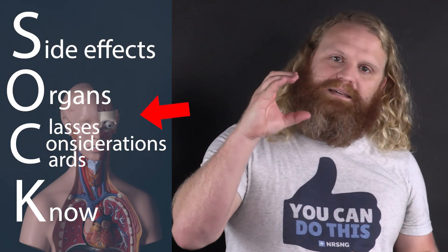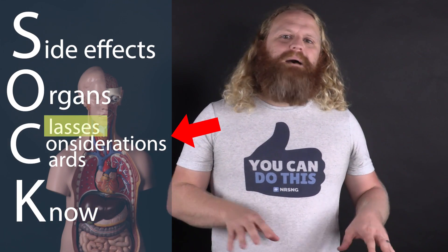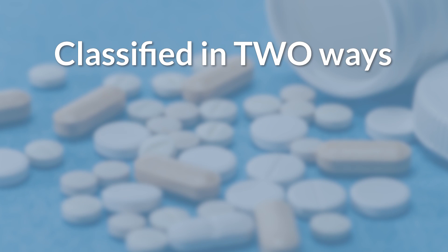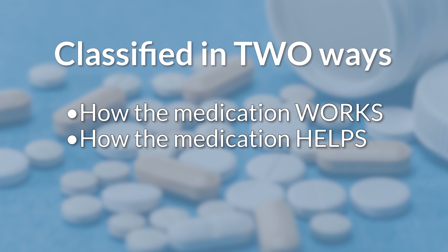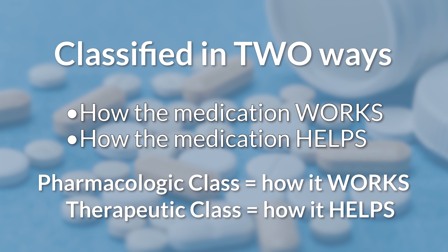With that in mind, let's move on to C, which stands for Classes, Considerations, and Cards. Medications are classified in two ways: how the medication works and how the medication helps. The pharmacological class is how the medication works; the therapeutic class is how the medication helps. As an example, let's look at cimetidine or Tagamet. Its pharmacological class is histamine H2 antagonist; its therapeutic class is anti-ulcer. At NRSNG, we recommend learning pharmacological classes for three reasons. First, this goes hand-in-hand with learning anatomy and physiology and focusing on the organs. If you understand the A&P and then focus on pharmacological class, everything starts coming together much better.